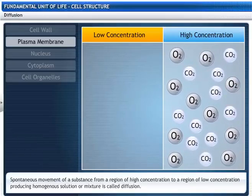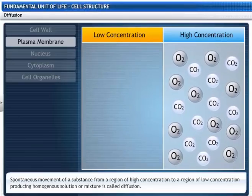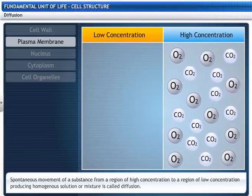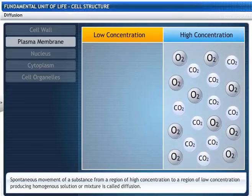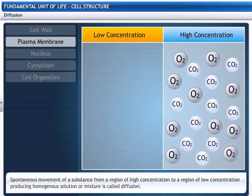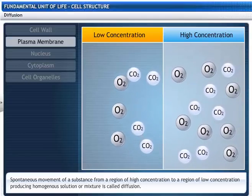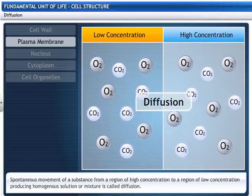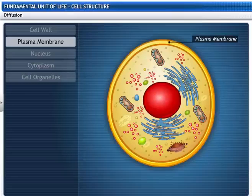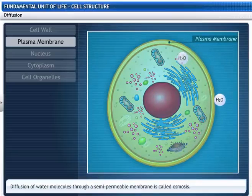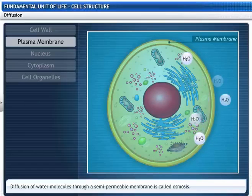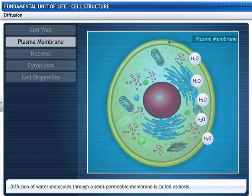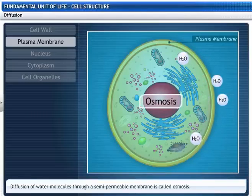There is spontaneous movement of gases like carbon dioxide and oxygen from a region of high concentration to a region of low concentration to form homogeneous solutions through diffusion. The diffusion of solvent molecules through a semi-permeable membrane from a region of low concentration to high concentration is called osmosis.